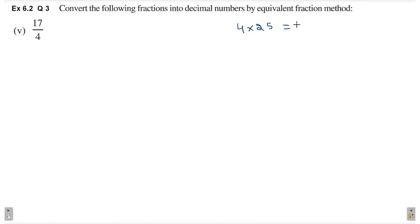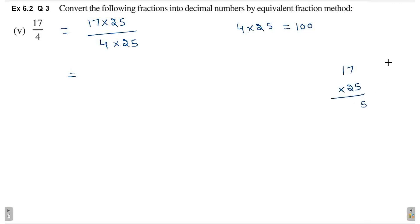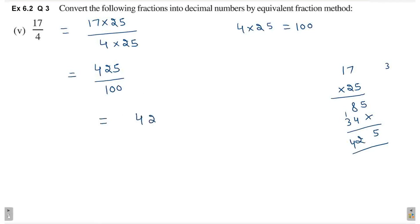4 ko 25 se multiply karenge to we will get 100. So, we will multiply both numerator and denominator by 25. 17 into 25 divided by 4 into 25. This is equal to: 5 7s are 35, 3 carry; 5 plus 3, 8. Multiply by 17: 2s are 34. So, yeh aajayega 5. 8 plus 4, 12; 1 carry; 3 plus 1, 4. So, 425 divided by 100. Ab laga do decimal. Numerator waala number likh lo, 425. Denominator me 1 ke baad hai 2 zeros. So, right hand side se 2 digit chhod ke left hand side pe lagana hai decimal. 1 digit, 2 digit, left hand side pe lag gaya decimal. So, 4.25 is the answer.